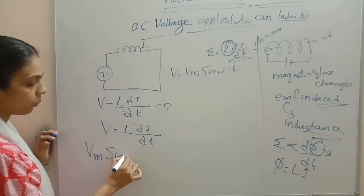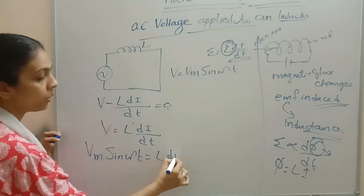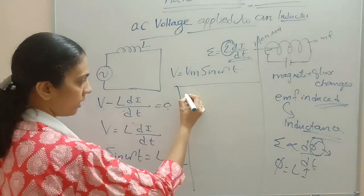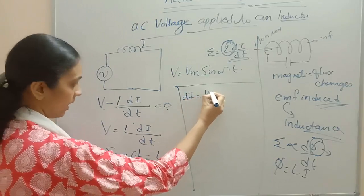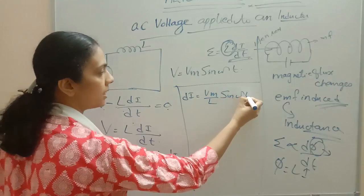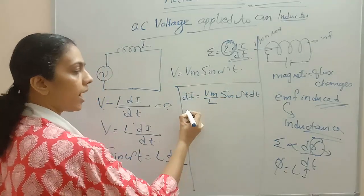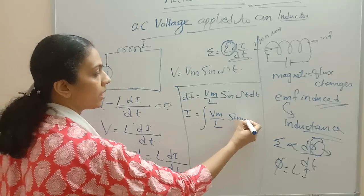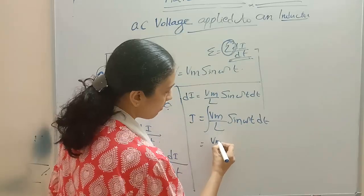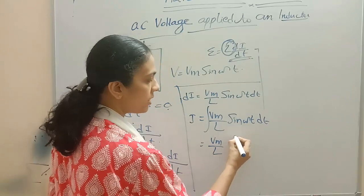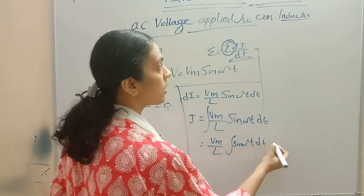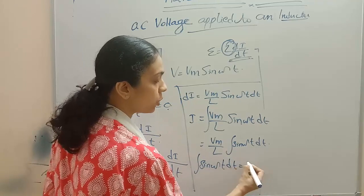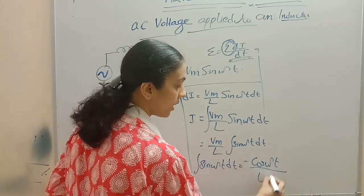So Vm·sin(ωt) equals L·(di/dt). Our aim is to find i. We rearrange to get di equals (Vm/L)·sin(ωt)·dt. To get the value of i we should integrate: integrating (Vm/L)·sin(ωt)·dt. Vm/L is constant, and the integral of sin(ωt)·dt equals minus cos(ωt) divided by ω.